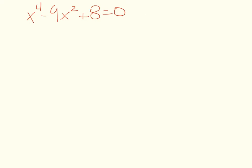For our first example, we have an equation raised to the fourth power. It is in quadratic form because the first exponent is four, the next is two — which is half of four — and there's no variable in the third term. We should expect four answers, since the degree is four. Let's change it into something more familiar: a squared term, a term to the first power, and a term with no variable.